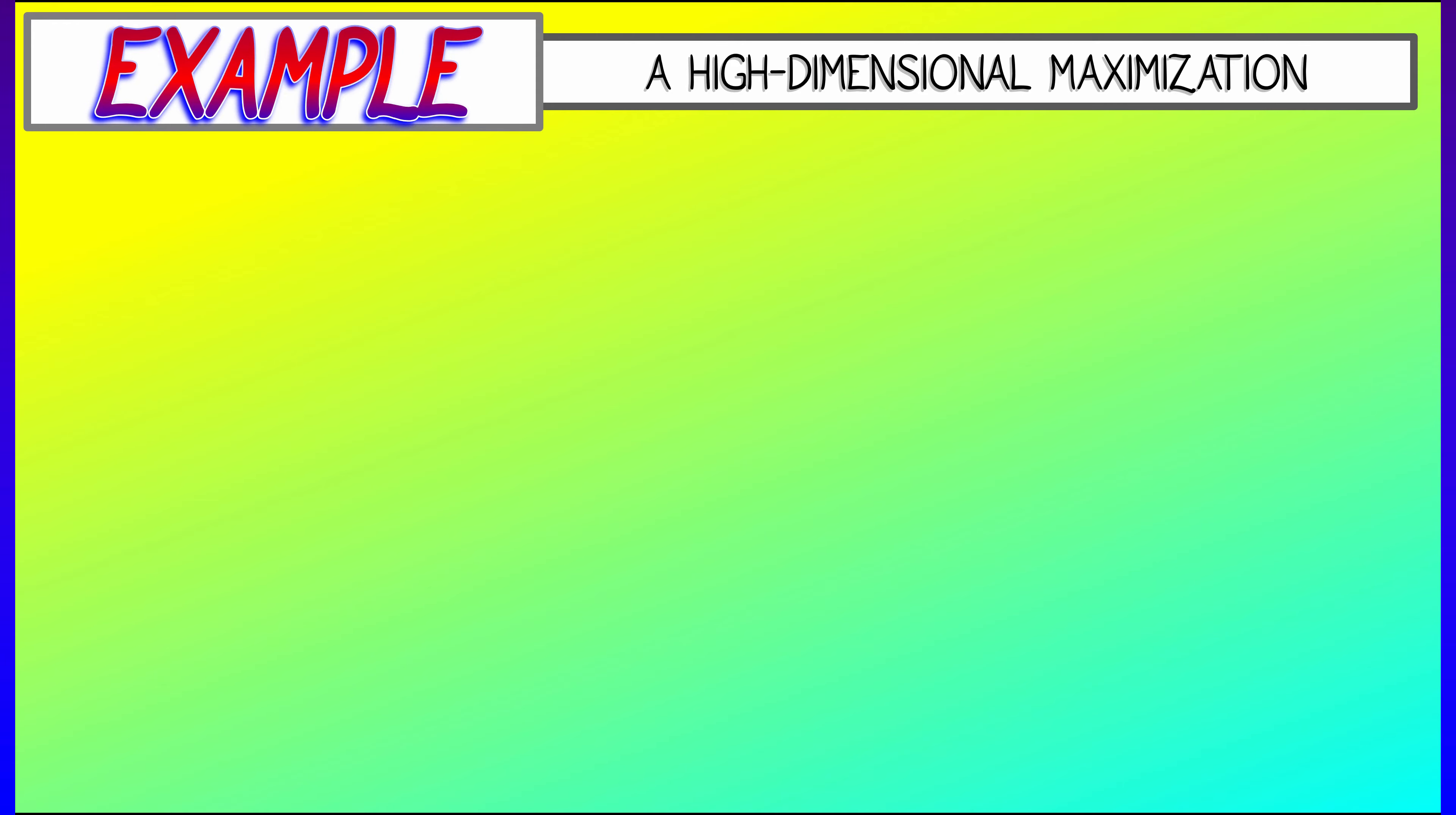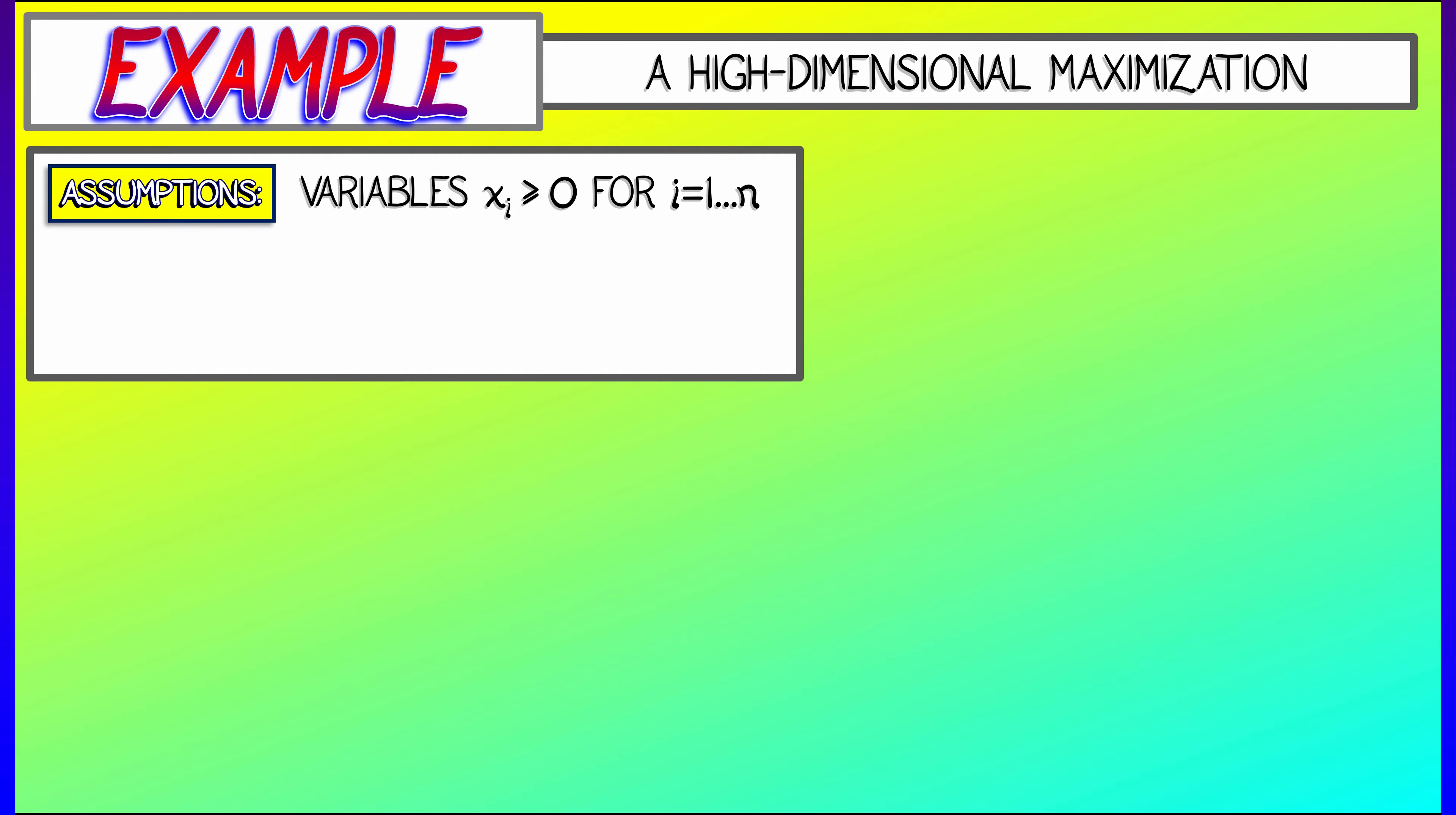Here is a high dimensional, arbitrary dimensional example of an optimization problem. Let's say you have variables x1 up through xn, they're all non-negative, subject to the constraint that they have to lie on a sphere of radius a. So the sum of the squares of the variables is some fixed constant a squared.